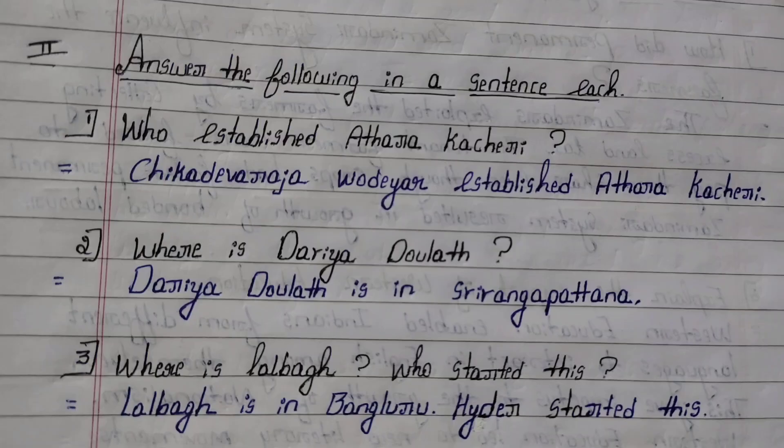Second section: Answer the following in a sentence each. First question: Who established Atara Kacheri? Answer: Chikkadeva Raja Vodayar established Atara Kacheri. Second question: Where is Dariya Dhaulat? Answer: Dariya Dhaulat is in Shrirangapatana.